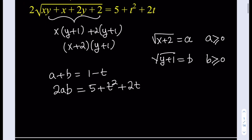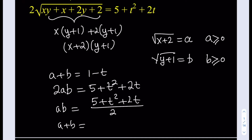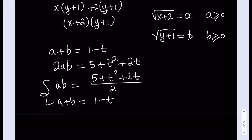Let's divide the second equation by 2, giving us ab equal to (5 plus t squared plus 2t) over 2. We also know a plus b equals 1 minus t. So we're looking for two numbers a and b such that their product and sum are given — which, thinking about François Viète, means we can set up a quadratic equation using the product and sum of roots.